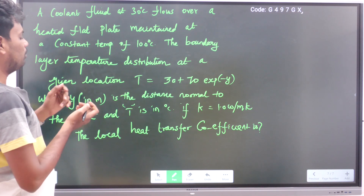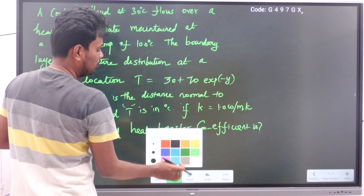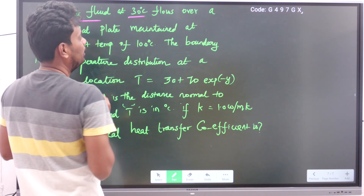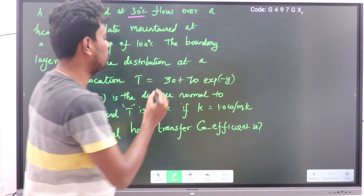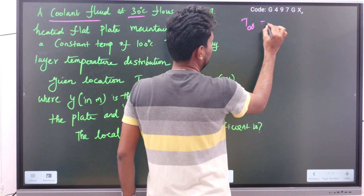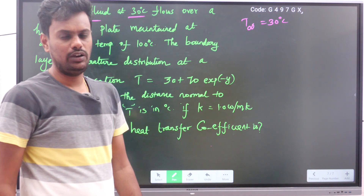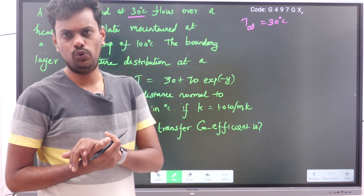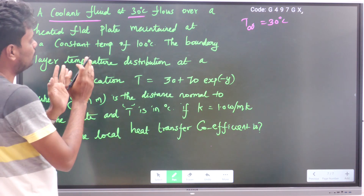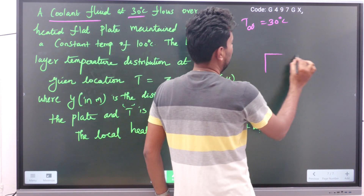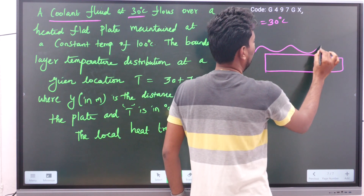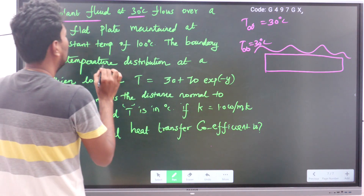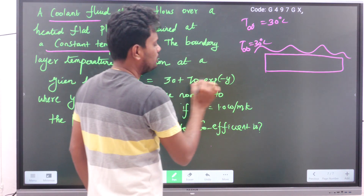A coolant fluid initially at 30 degree Celsius — always if there is a fluid, you have to take its temperature as T infinity. Here T infinity is 30 degree Celsius, whether it is air, gas, or any liquid. Next, a heated flat plate: the coolant fluid is flowing over the plate at a temperature of 30 degree Celsius.